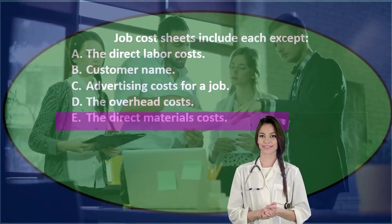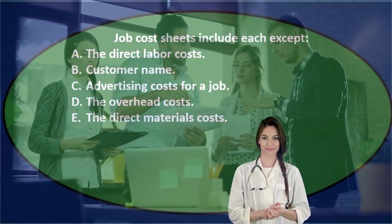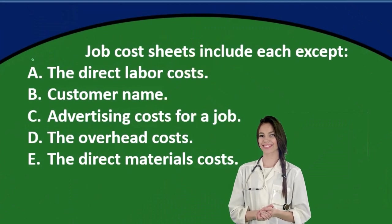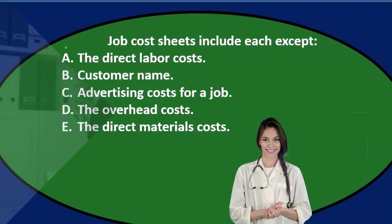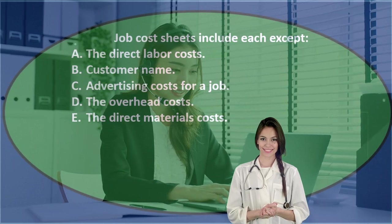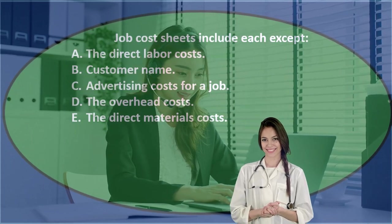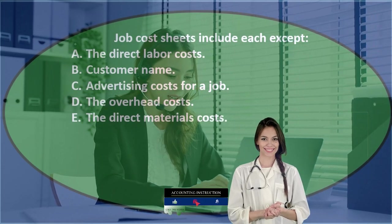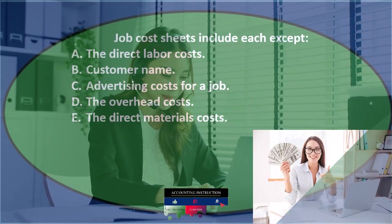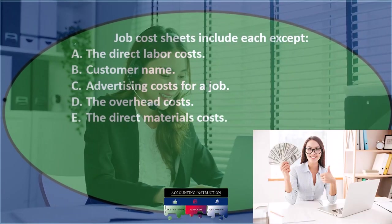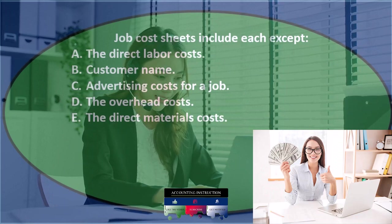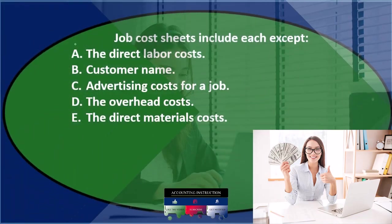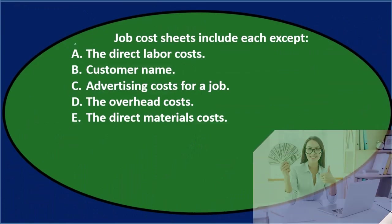Let's go through this again using the process of elimination — job cost sheets include each except. What is a job cost sheet? That's going to be the sheets that support the work in process or the finished goods accounts, in terms of the jobs we're working on — like inventory items we're manufacturing or a job a service company is working on. They typically include the details of the cost of the job.